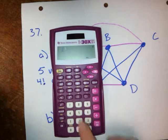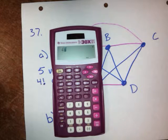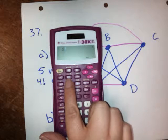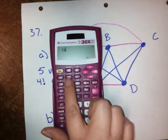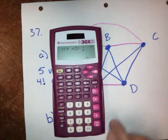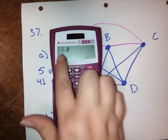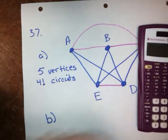Four factorial, you want to type in four, and then factorial is under the probability key, PRB, if you're on this same type of calculator. So, we take PRB, and arrow over to the exclamation mark, and hit enter, and that's four factorial, which is 24.